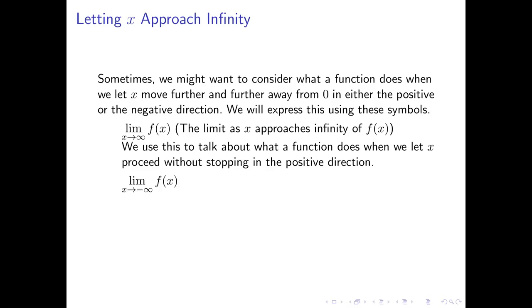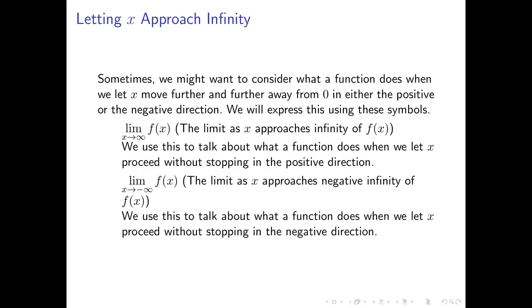If we want to see what happens as x gets further and further from zero in the negative direction, we write the limit as x approaches negative infinity of f of x. This allows us to talk about what a function does when x gets further and further from zero in the negative direction — moving to the left on the graph. So these are new adaptations of our limit notation to this new situation involving going off to infinity.